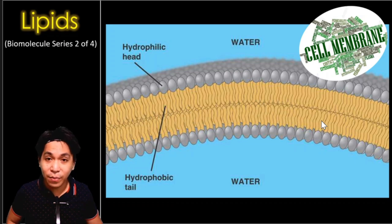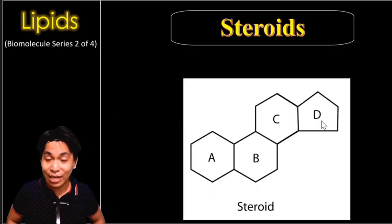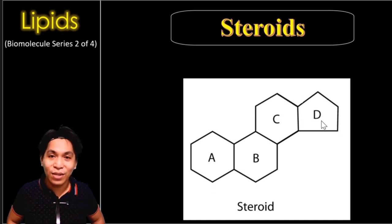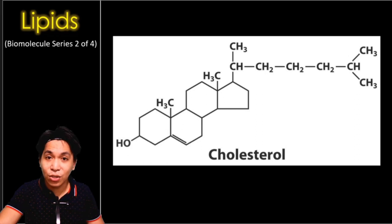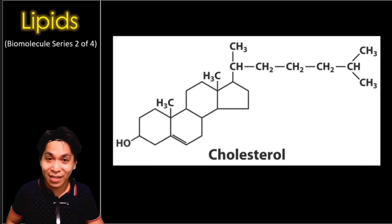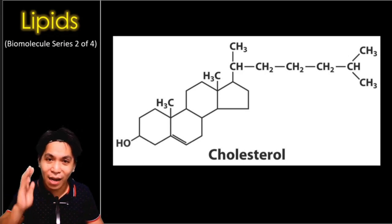Fats are not that bad. The third type of lipids are the steroids. They are not bad molecules — just misunderstood. Steroids are a unique molecule composed of four rings: the first three are six-sided rings, while the fourth is a five-sided ring. Steroids are basically the foundation for creating cholesterol, which is a precursor of many important hormones and vitamins in our body.